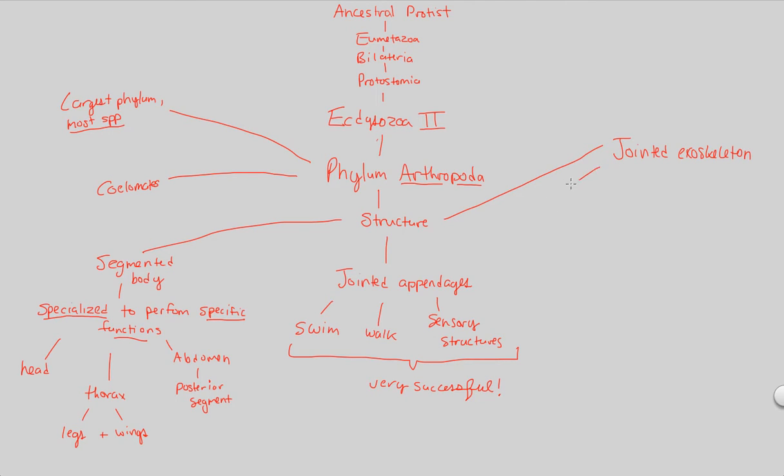So what is this jointed exoskeleton? First of all, this exoskeleton will consist of chitin and other proteins. And if we remember, chitin is the polymer of glucose, but it's an N-containing, a nitrogen-containing polymer, and it's very good with its structure. It's a very nice structural polymer. Chitin and proteins will consist and make up the exoskeleton of our Arthropoda.